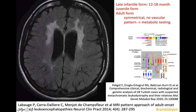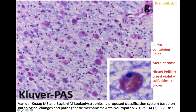In metachromatic leukodystrophy, the anterior white matter is involved first. There are different mutations in the ARSA gene, and the mutation and the combination of mutations — because it's an autosomal recessive disease — can predict the form of metachromatic leukodystrophy. This gene is involved in the lipid metabolism, and especially of the sulfur-containing lipids, which are about 10% of the lipids in the myelin sheath.